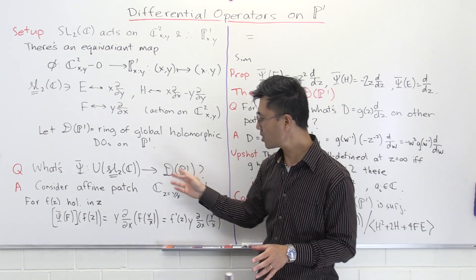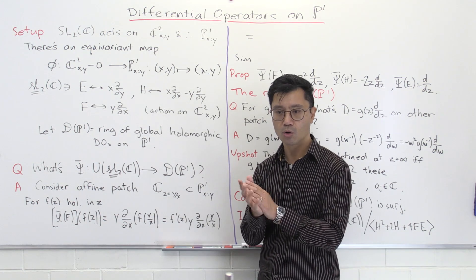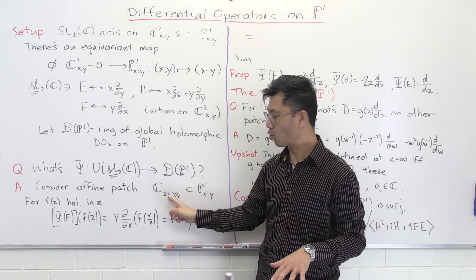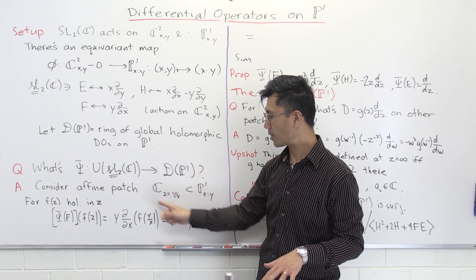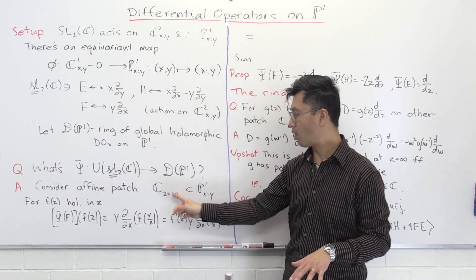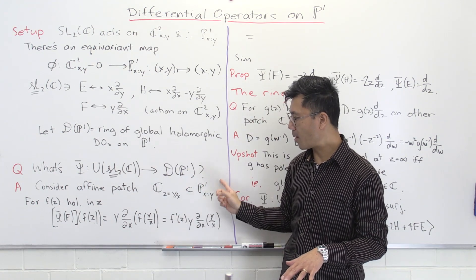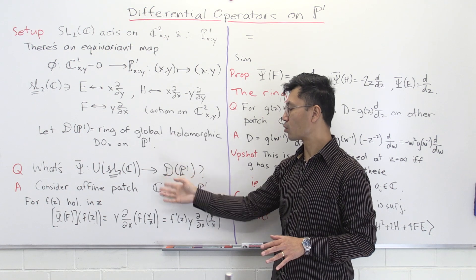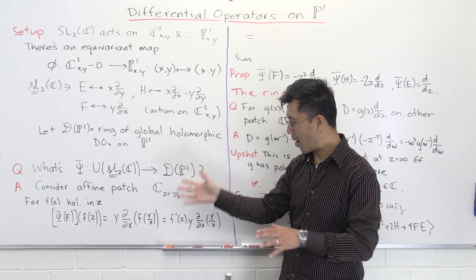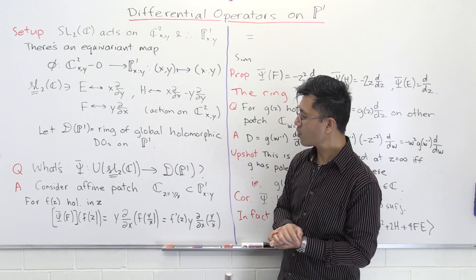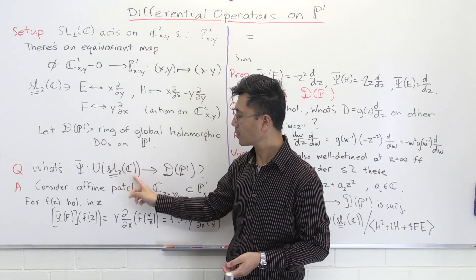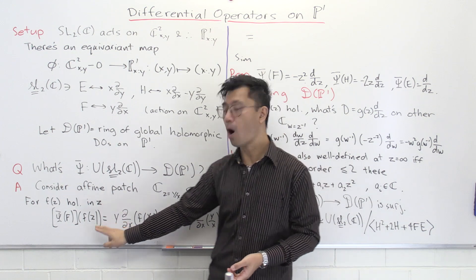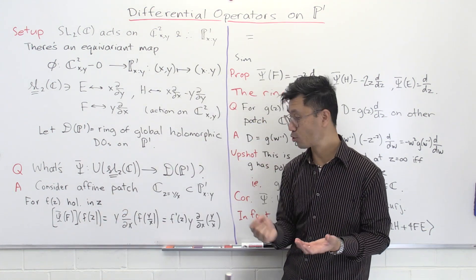The easiest way to think about this is to view the projective line as the usual complex plane with a point at infinity attached. The complex variable is Z = y/x — this is the affine patch away from Z equals infinity, meaning the whole projective line minus the point at infinity. We'll look at what happens there, and the behavior there will tell us the behavior on all of P1. For example, consider the element F inside SL2C, which is inside the universal enveloping algebra as well. How does F act on some holomorphic function f(Z)?